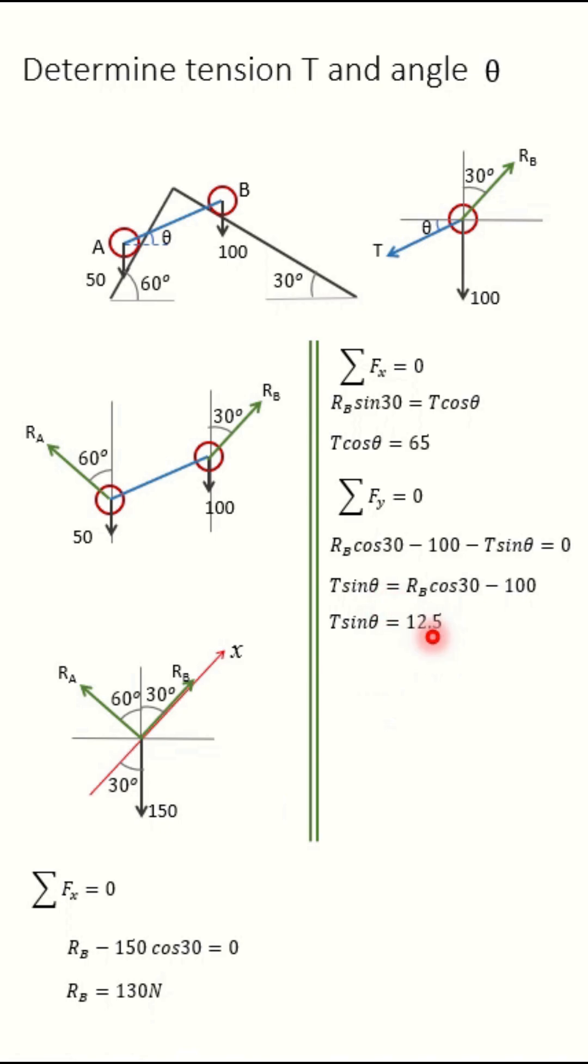Now T sin theta is equal to 12.5, T cos theta 65. So divide this, you will get tan theta. Tan theta is equal to 12.5 divided by 65 is equal to 0.192. So theta is equal to 10.8 degree.